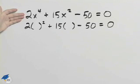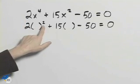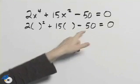We're asked to solve this equation, which is a quadratic form. You'll notice in the next line, I've written it so that we have 2 times something squared plus 15 times something minus 50.